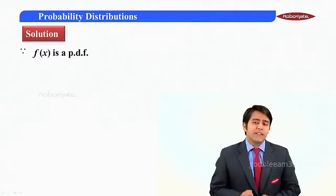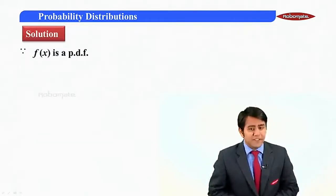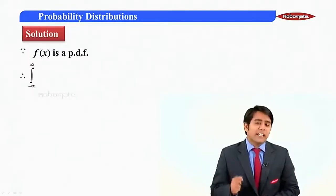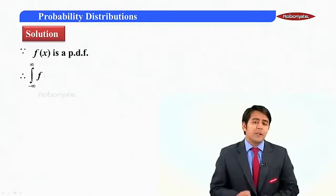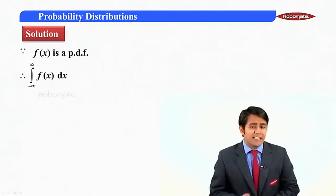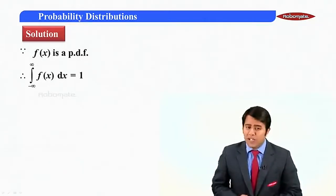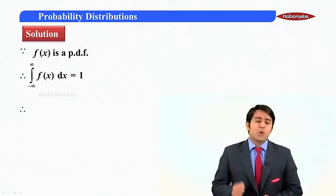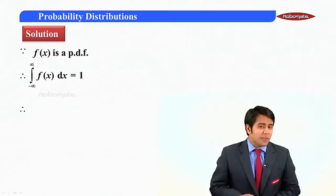Here, you must observe that the given value for f of x is a pdf. That means the integral from minus infinity to infinity f of x dx should be equal to 1. Now in this, the lower limit is 0 and upper limit is phi.